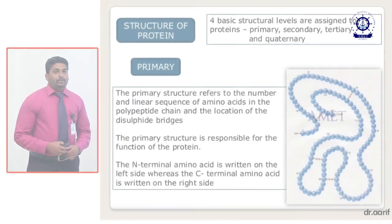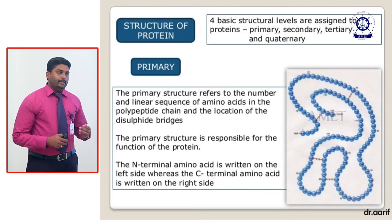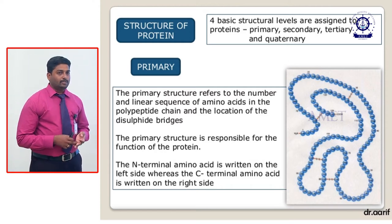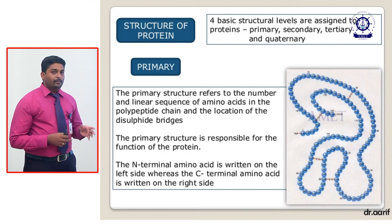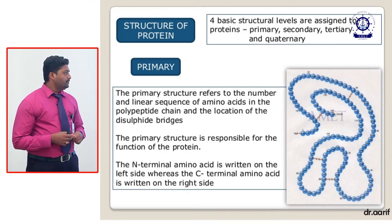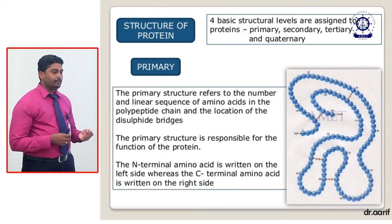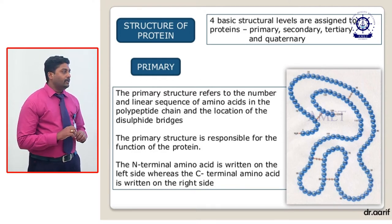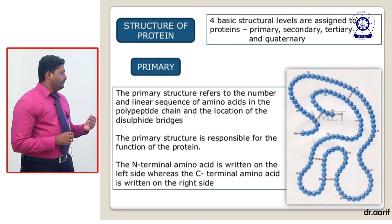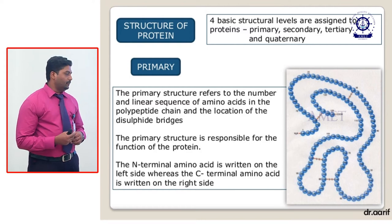Collagen is the most abundant protein in animals, and RuBisCO is the most abundant protein in plant cells. Protein synthesis is mostly controlled by the DNA. Proteins are basically classified into four structural types: primary, secondary, tertiary and quaternary structures. The primary structure refers to the number and linear sequence of amino acids in polypeptide chains and the location of disulfide bridges. The primary structure is responsible for the function of the protein.